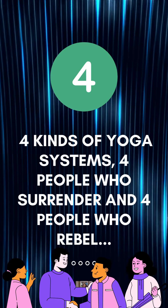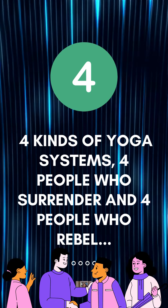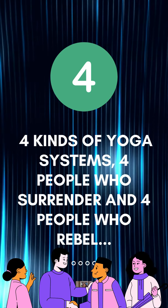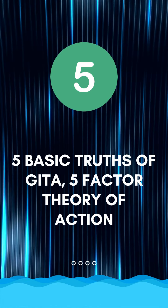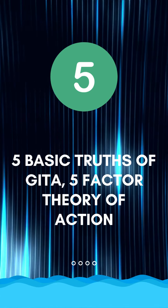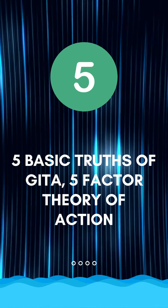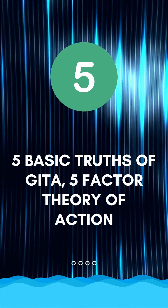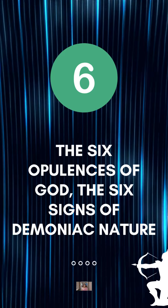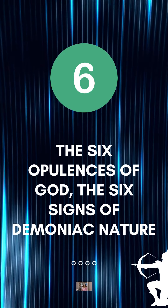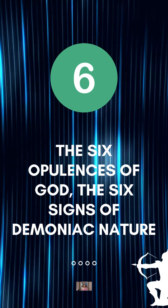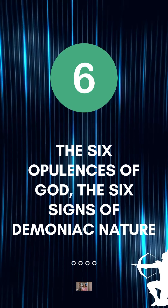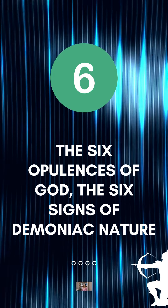Also four: the four people who rebel against the Lord. Five: the five basic truths of the Gita and the five-factor theory of action. Six: the six opulences of God and the six signs of demoniac nature.